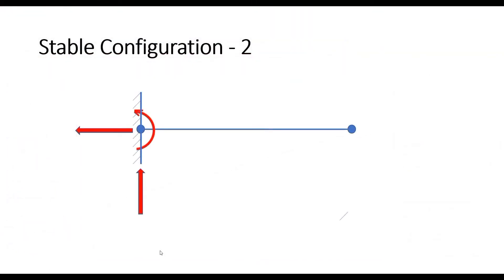Now let us discuss the next stable configuration from the last session: the left node has a fixed support assigned to it and the right node has no support. We saw how this results in a stable configuration. Assigning a fixed support to the left node means it has no freedom to move translationally — either in the x or y direction — nor freedom to rotate about the z-axis in the plane. Let us see how we can model this stable configuration in STATPRO.